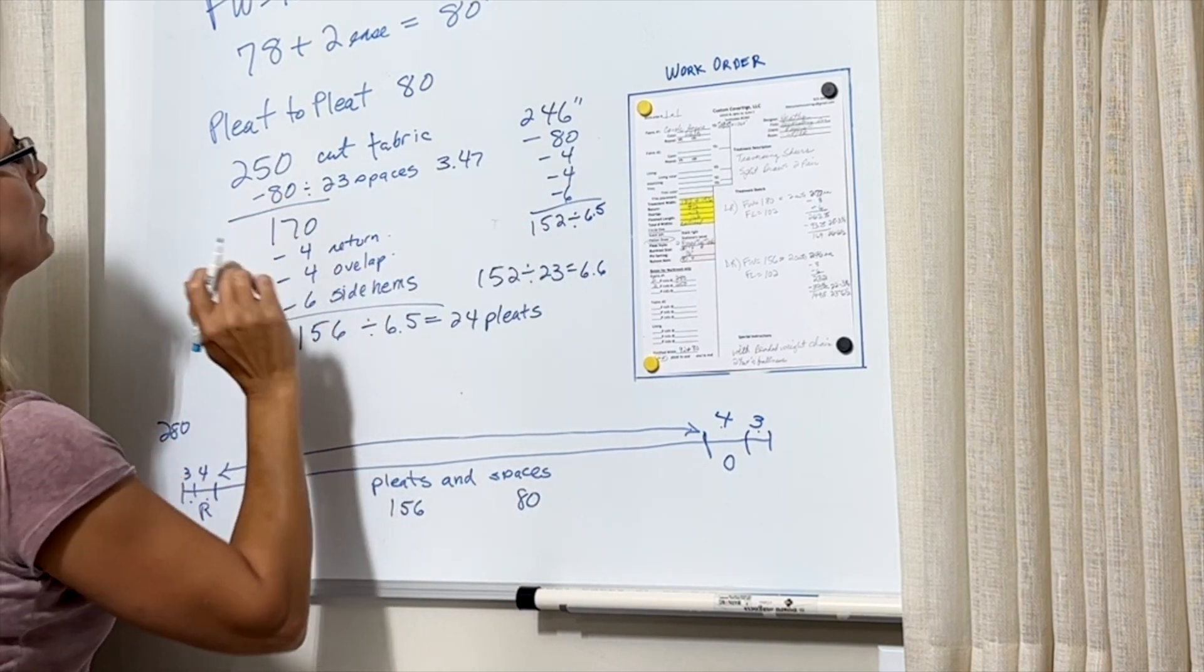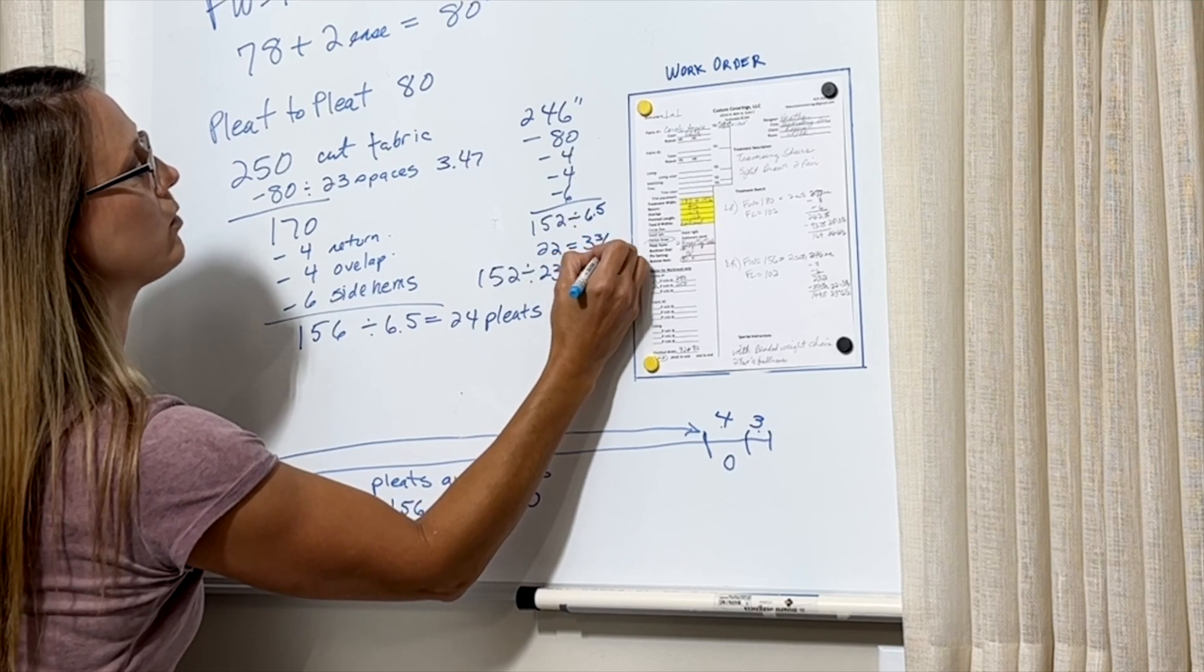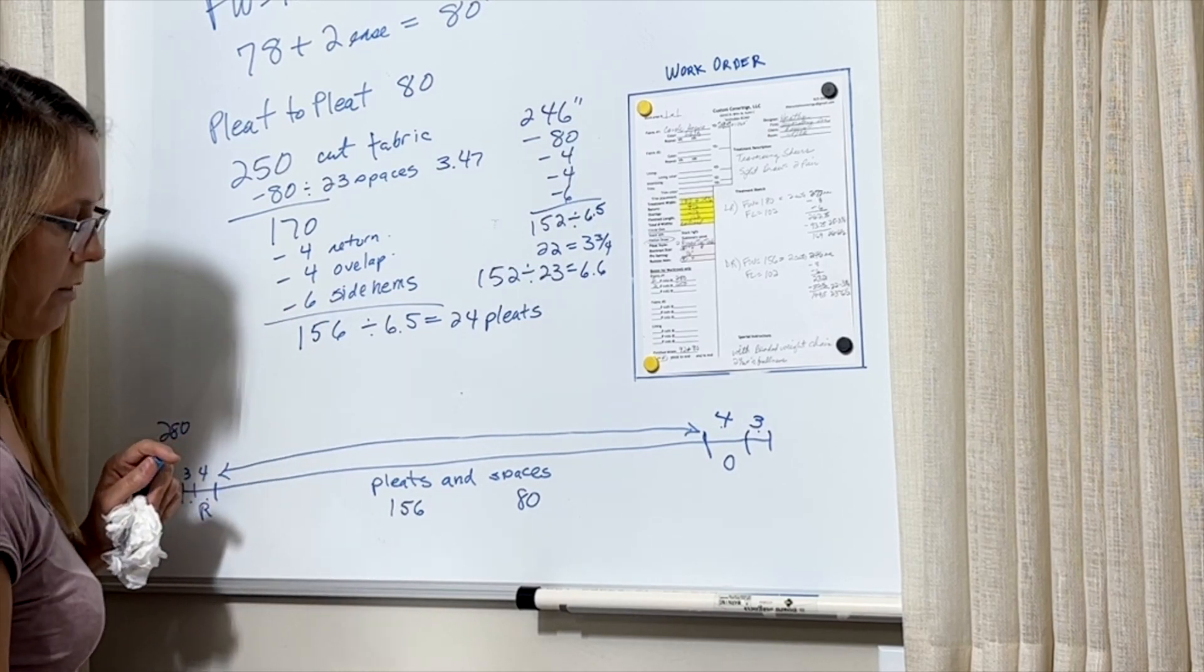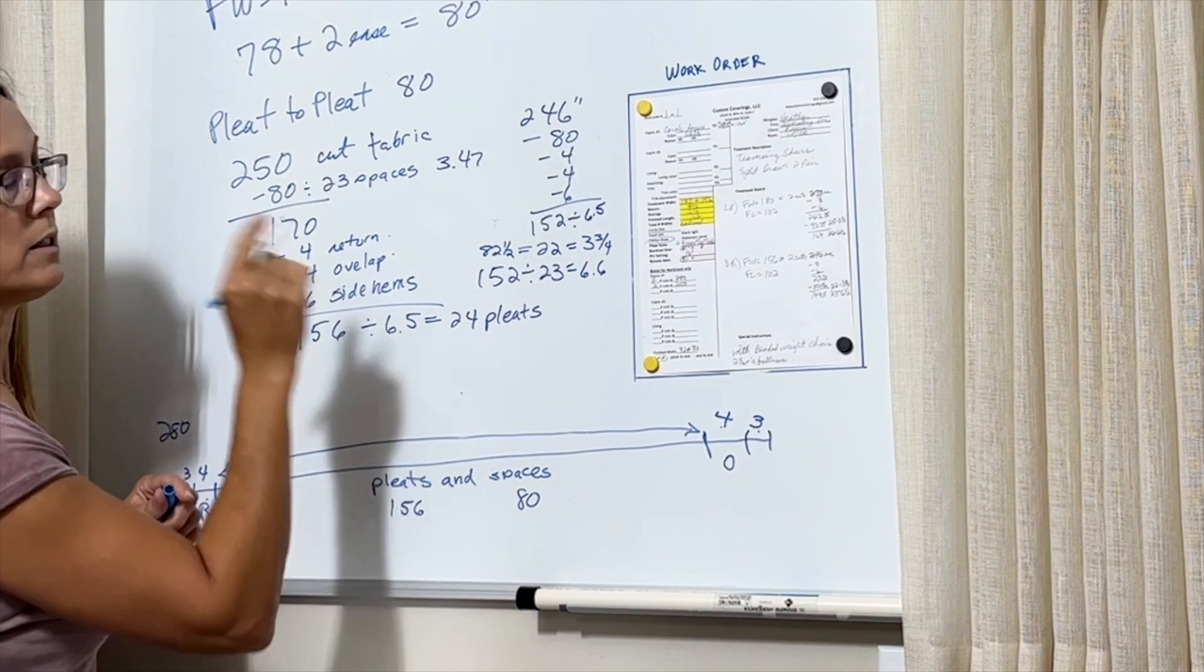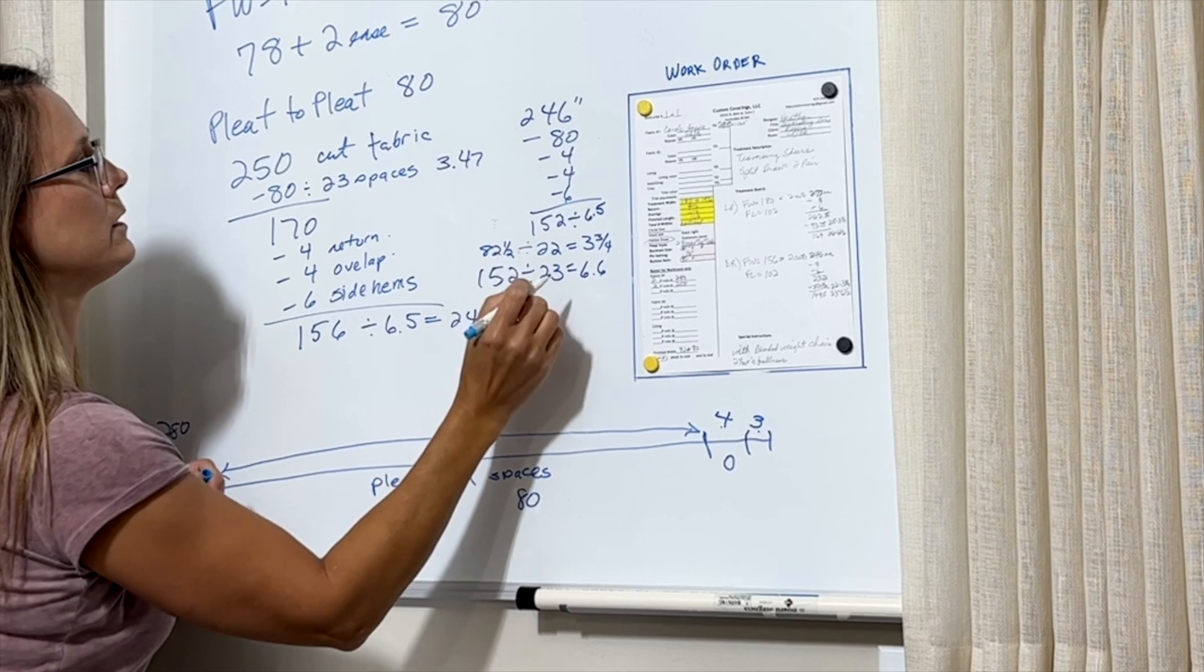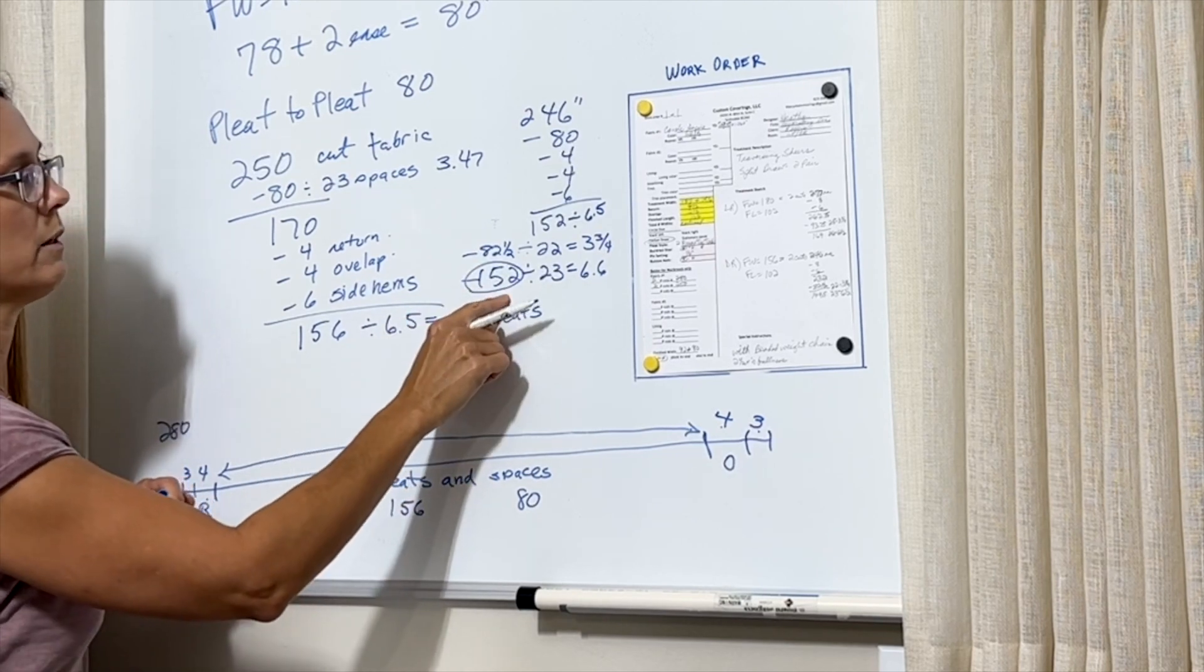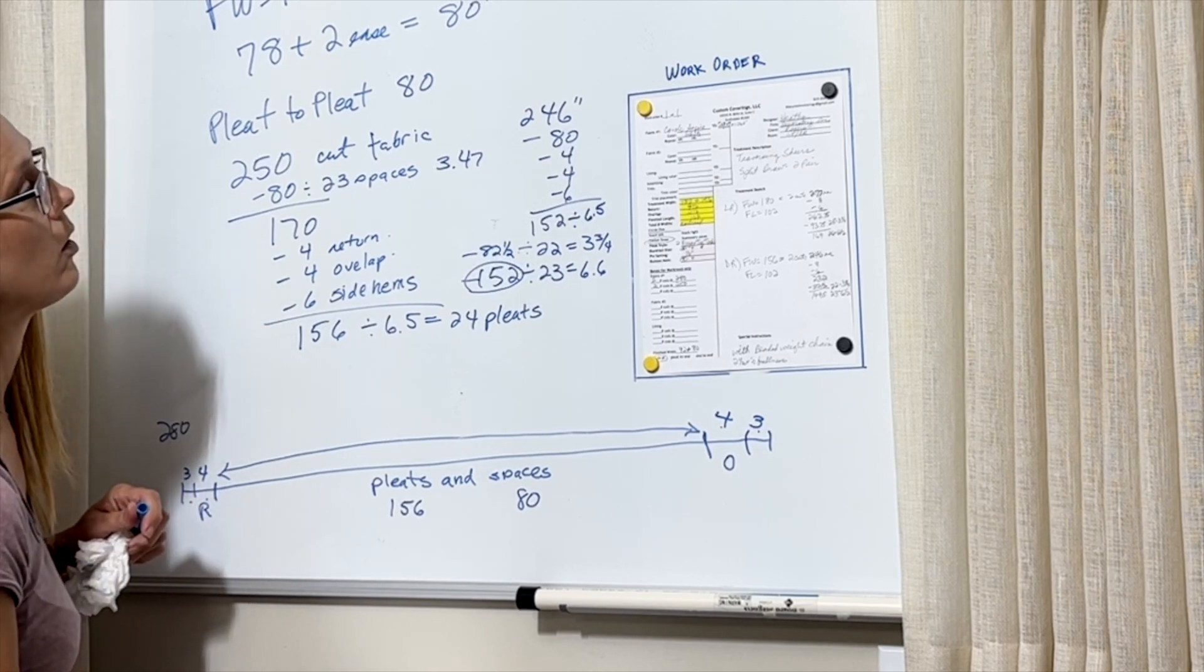And then the spaces, what if we just say we want 22 spaces at 3.75? So then we just multiply that number. That way we get the spaces the same as the other pair that we calculated yesterday. So that will bring the pleat-to-pleat to 82.5. And again, we ended up with a little bit bigger pleat-to-pleat yesterday to get a nice number to work with here. So let's do that again today. So if we do 22 spaces at 3.75, that means our pleat-to-pleat will be 82.5. That means this number here, the 152 for pleats, is going to be a little bit smaller, which is going to get our pleats closer to the 6.5 where I want them to be.